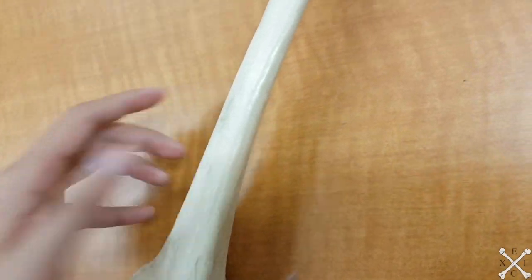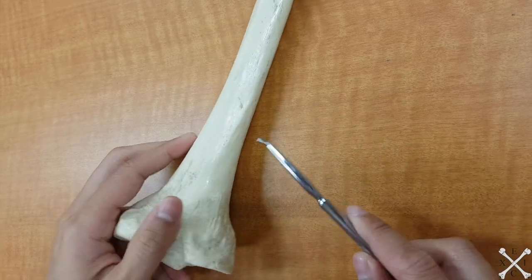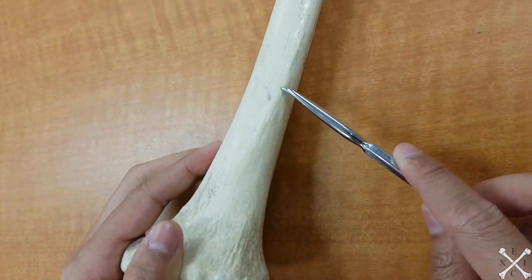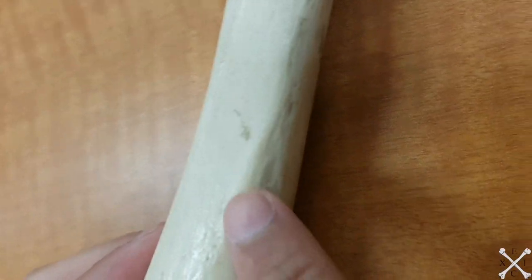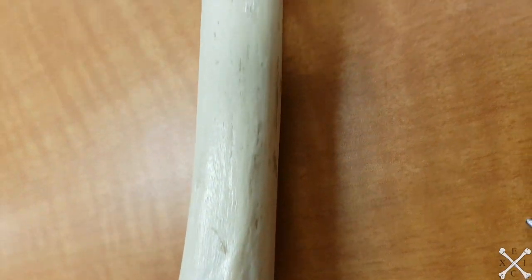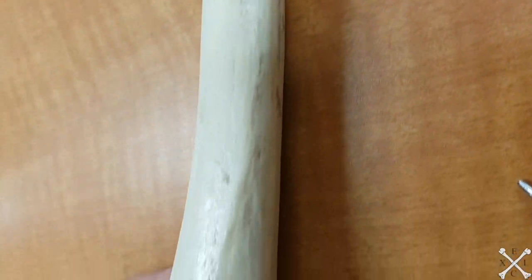The popliteal line. So we're going to look at it posteriorly, is actually this line right here. It's hard to see on the camera, but you can really feel it. And that's the popliteal line or the soleal line.